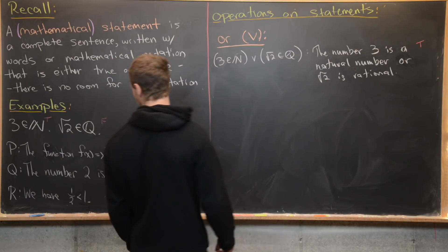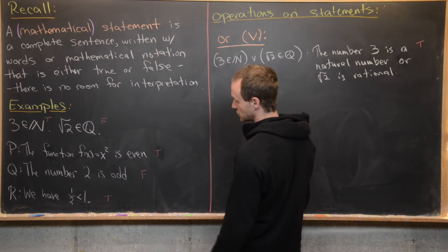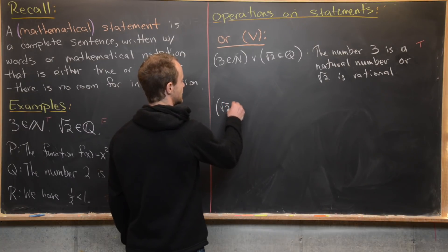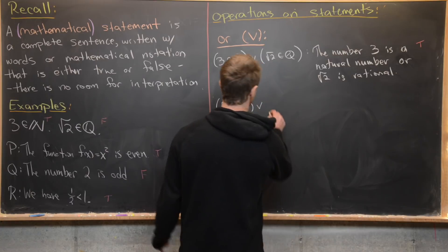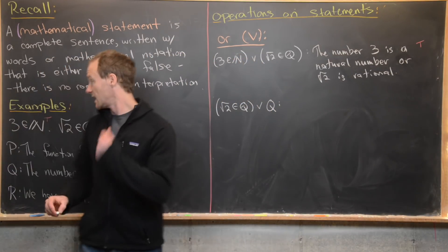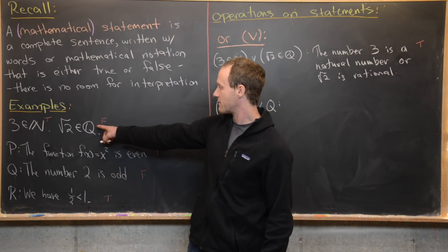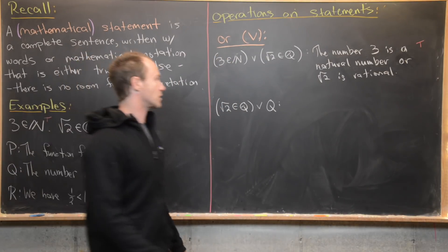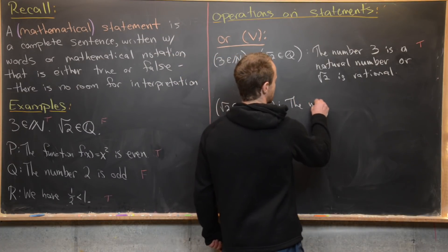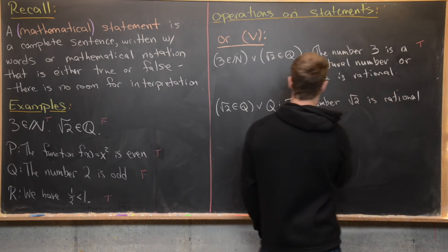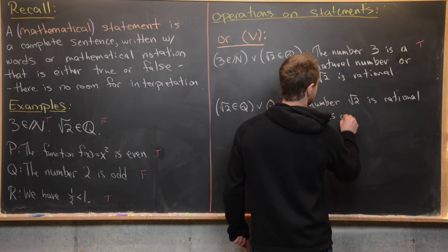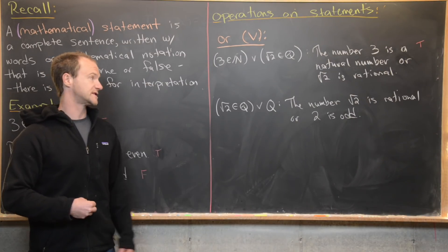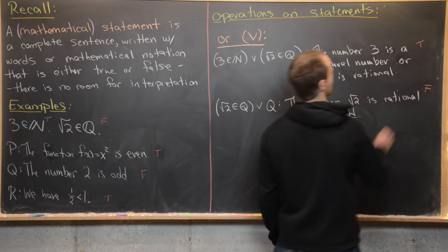Now let's combine 'the square root of two is rational' with 'the number two is odd' using OR. Written as a sentence: 'the square root of two is rational OR two is odd.' Both of those statements are false, and in fact the OR statement that combines them is also false.